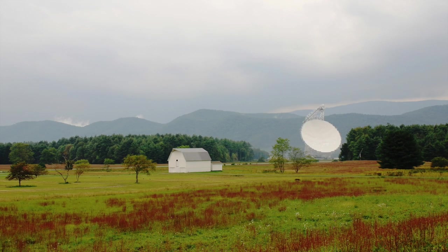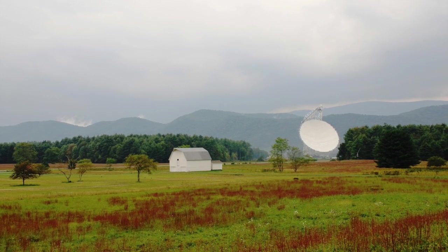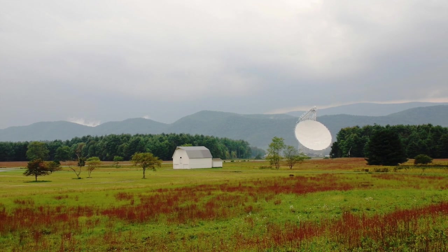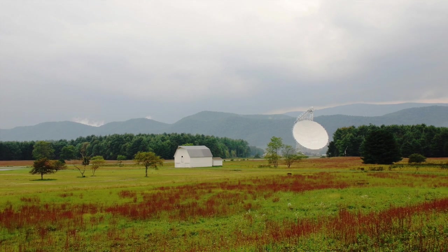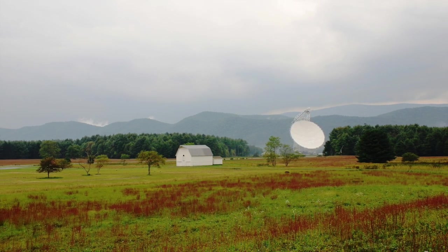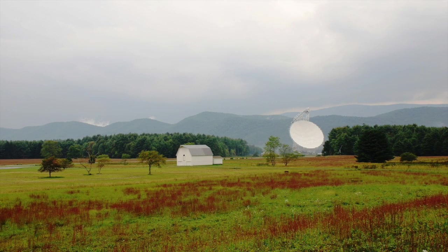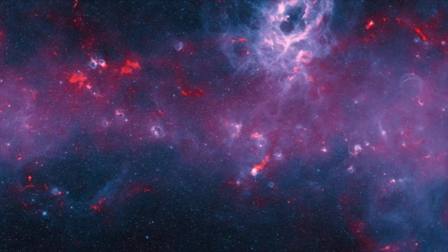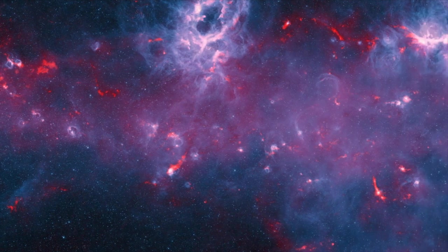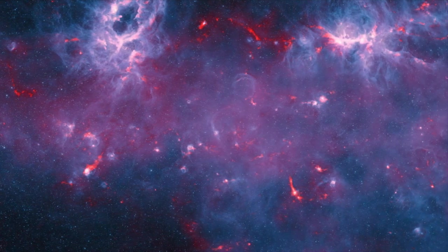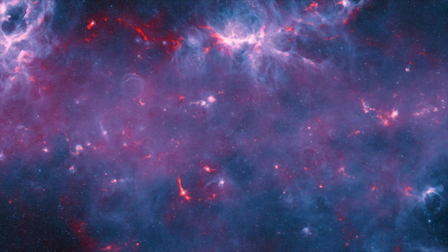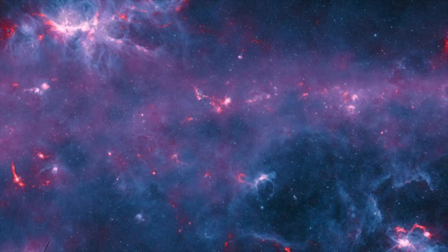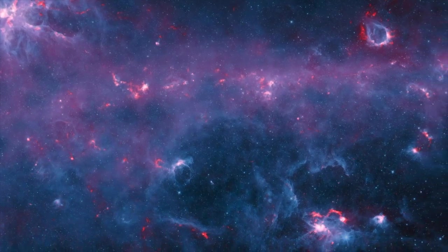I'm also involved in a project called Nanograv that stands for the North American Nanohertz Observatory for Gravitational Waves. And this is an attempt to use pulsars to detect gravitational waves. Now, I mentioned gravitational waves previously. There are these ripples in space time. In this case, we are looking for gravitational waves from supermassive black holes. So the biggest black holes in the universe that are doing a death spiral around one another before they merge. And that would impact the signals that we get from pulsars by causing the pulses to arrive a little bit earlier, a little bit late compared to what we would expect. But the deviation is only probably on the order of tens of nanoseconds over the course of many years.